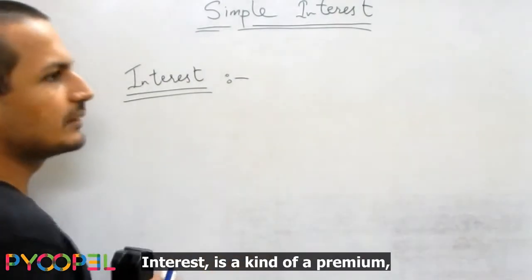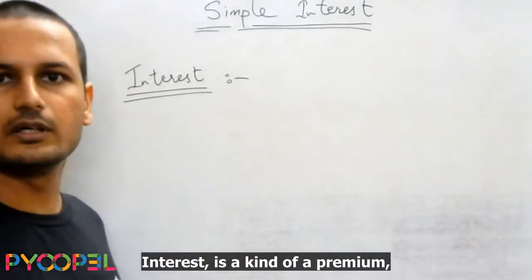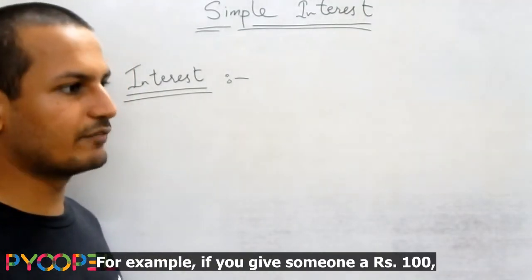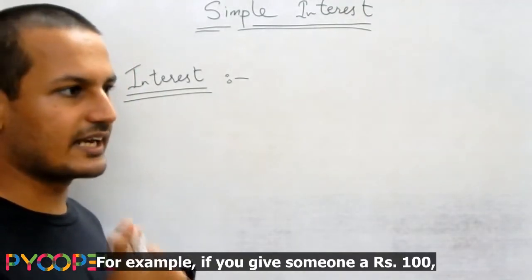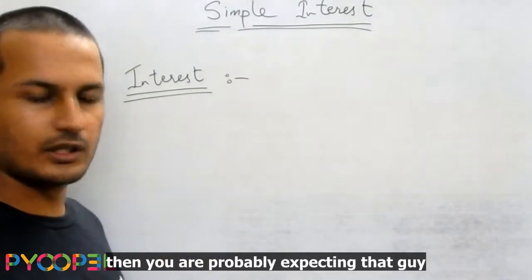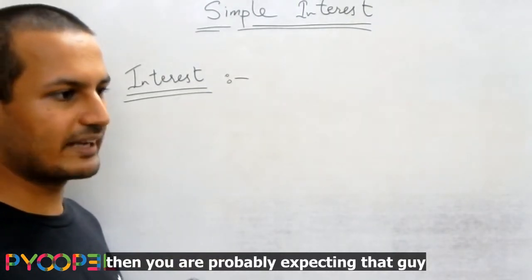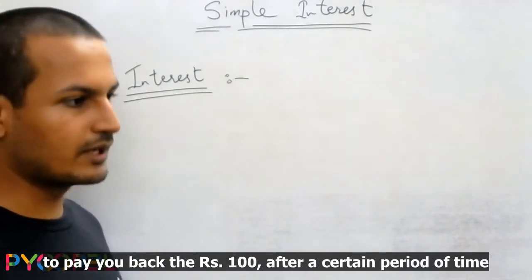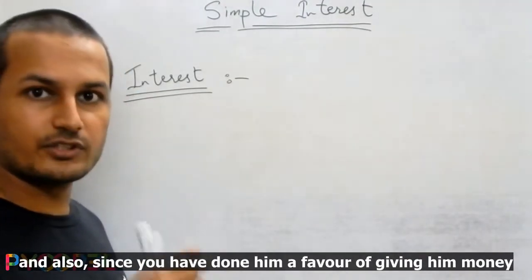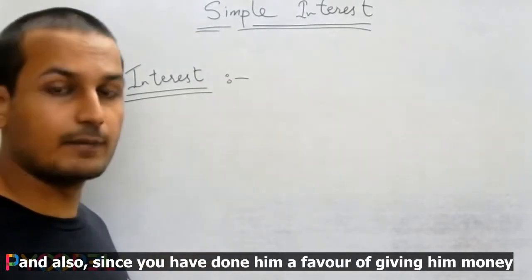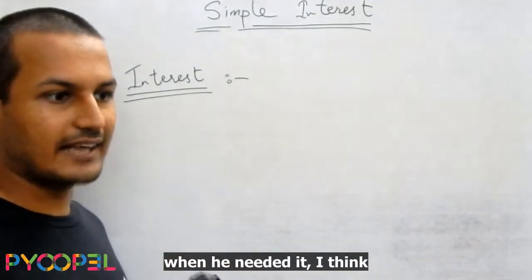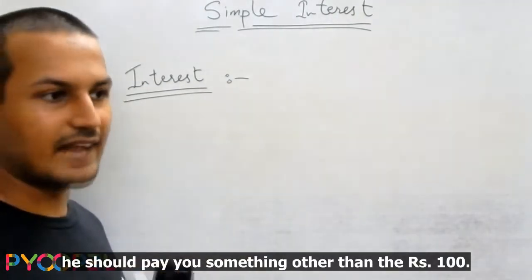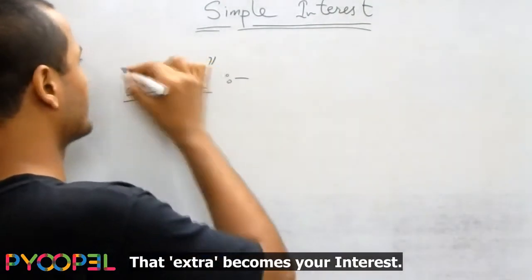Interest is a kind of a premium that is earned when you loan some money out. For example, if you give someone 100 rupees, then you are probably expecting that person to pay you back the 100 rupees after a certain period of time. And since you've done them a favor of giving them money when they needed it, they should pay you something other than the 100. That extra becomes your interest.